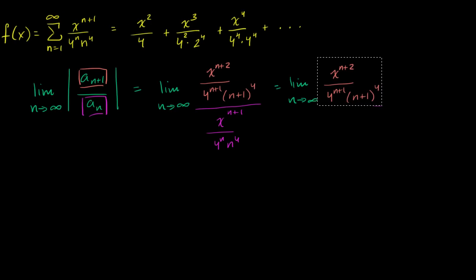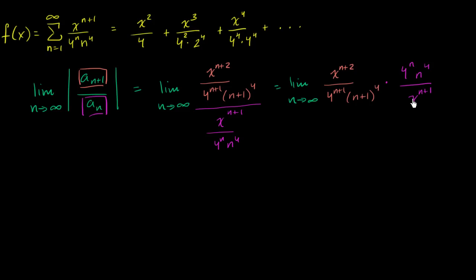Multiplying by the reciprocal gives us four to the n times n to the fourth over x to the n plus one. Now we can simplify: x to the n plus two divided by x to the n plus one — the exponent difference is one, so that simplifies to just x in the numerator. Then four to the n divided by four to the n plus one — dividing numerator and denominator by four to the n gives one over four.